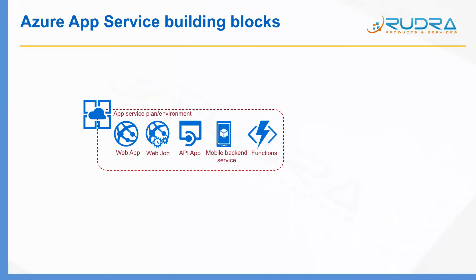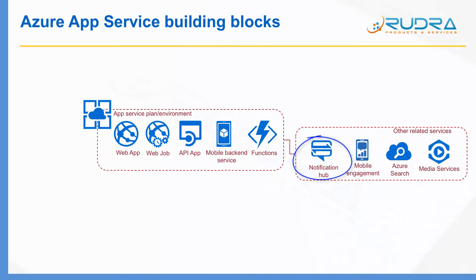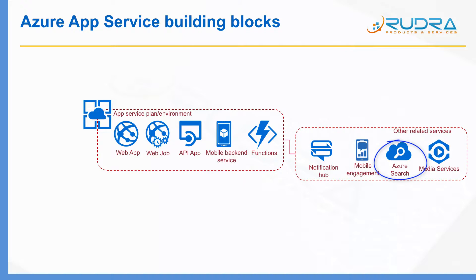Apart from the apps that are part of App Service Plan, there are other related services closely associated with them. Those related services include Notification Hub, which you can use to push notifications to mobile devices. You can use Mobile Engagement to carry out mobile analytics such as user engagement. You can also integrate Azure Search into your web applications, and you can use Media Services if you want to develop something like YouTube.